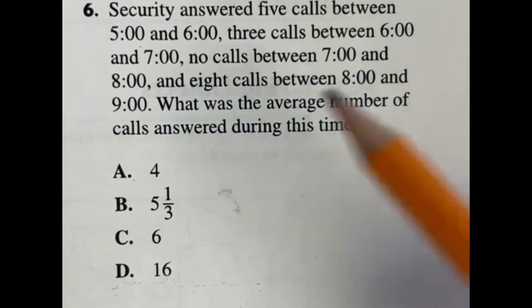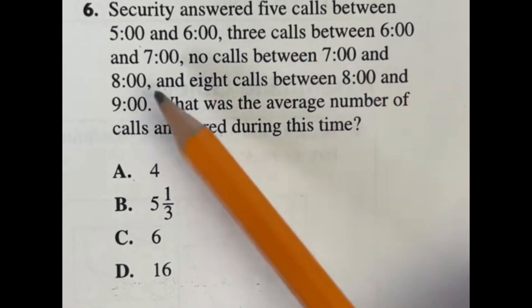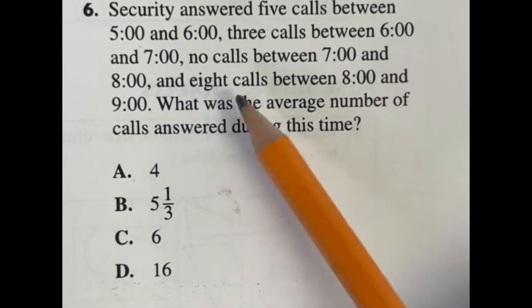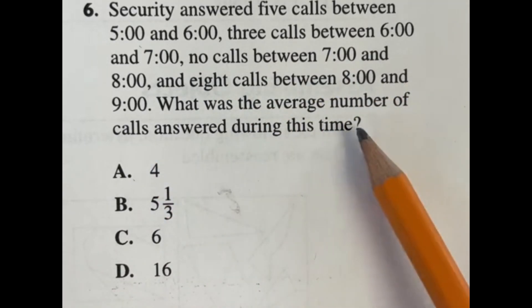There is absolutely no reason you should be getting number six wrong. Security answered five calls between five and six, three calls between six and seven, no calls between seven and eight, and eight calls between eight and nine. What was the average number of calls answered during this time?